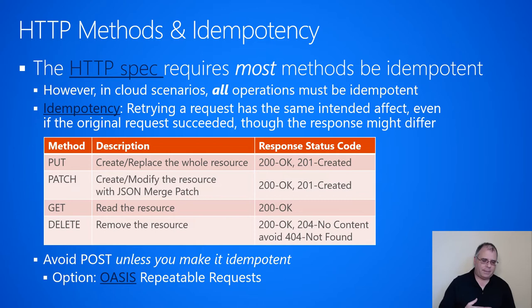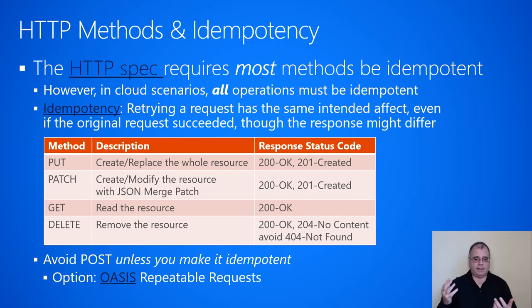PATCH is really similar — it lets you create or modify a resource. We highly recommend using it with JSON merge patch, which is what makes PATCH idempotent. If you're using PATCH to create a resource, you would return 201. If you're using PATCH to modify an existing resource, you would return 200 OK. And again, the 201 is advisory, because a client may never actually see it if there's a timeout or failure and it retries the operation.